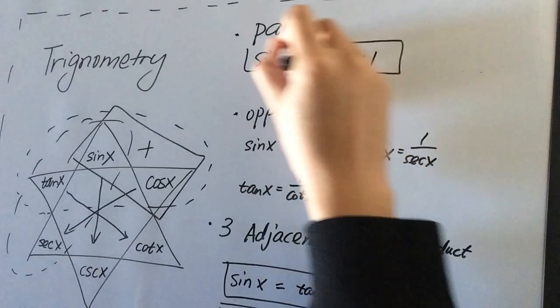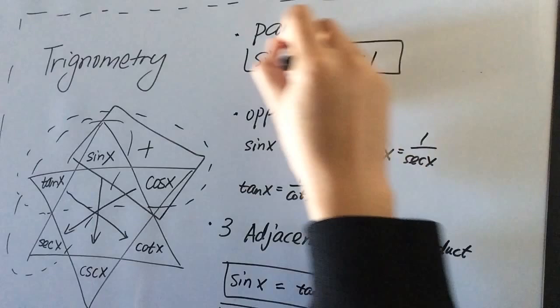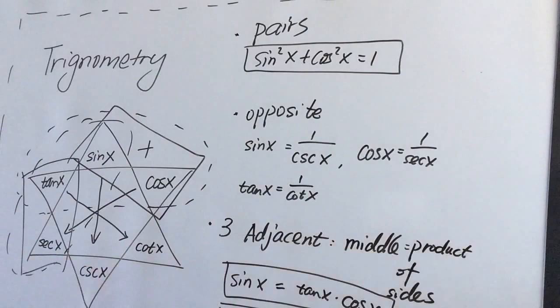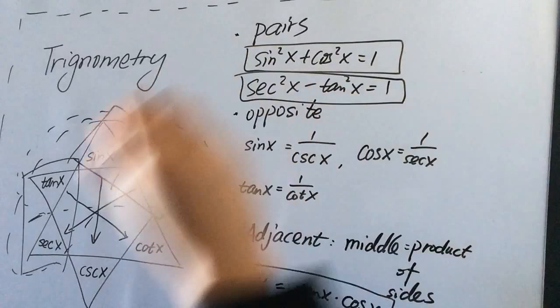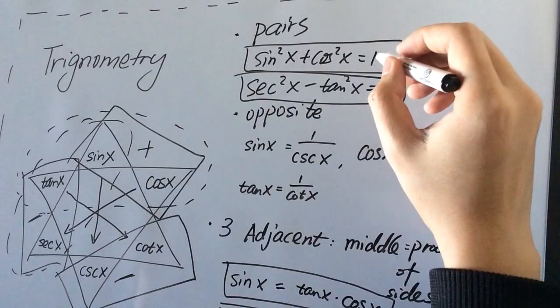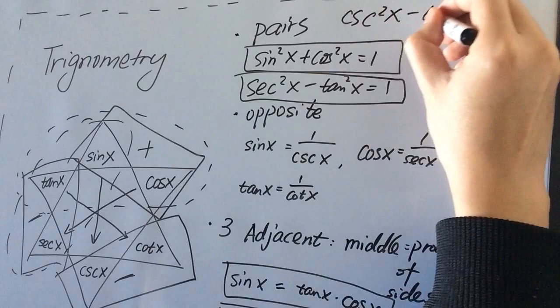Isn't that cool? And then we have this square, this pair. So this is minus. So we have secant square x minus tangent square x equals one. And then last pair is this one. And I'll put a minus there. Which is cosecant x square minus cotangent square, equals one.